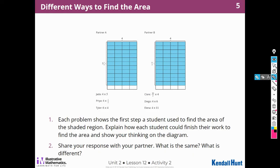Explain how each student could finish their work to find the area and show your thinking on the diagram. All right, so Jada started with 4 times 5. That would be the first step because that would tell me the area of this, right? Here's my whole number, and there's my 5. The second step I think that Jada should do is add 4 times 1 half. Because we have to add in this shaded area here.